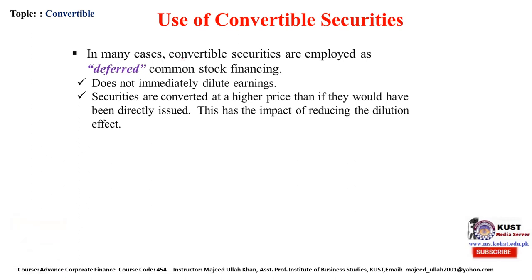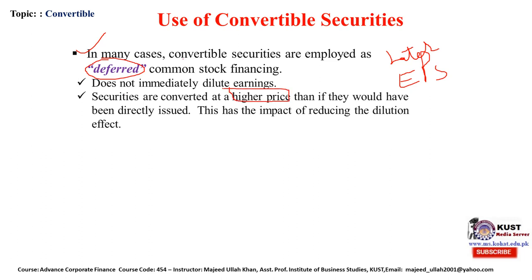Regarding the use of convertible securities in financing: in many cases, convertible securities are used as deferred common stock financing. Essentially these are common stock, but issuance is deferred to a later date, and the company enjoys the financing right now. This does not immediately dilute earnings per share. The securities are converted at a higher price than if common stock had been directly issued, which has the impact of reducing the dilution effect.